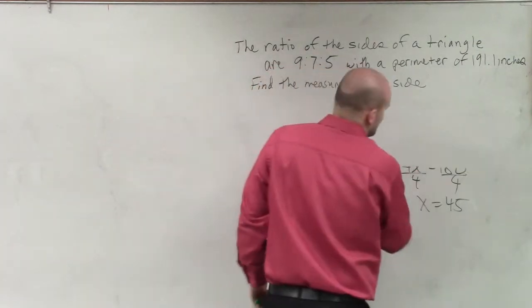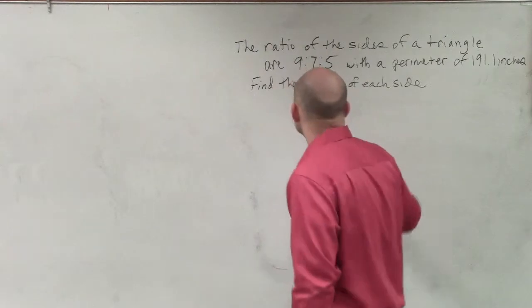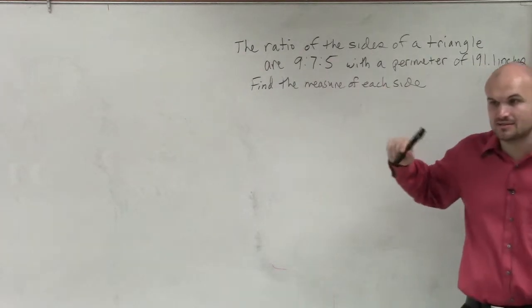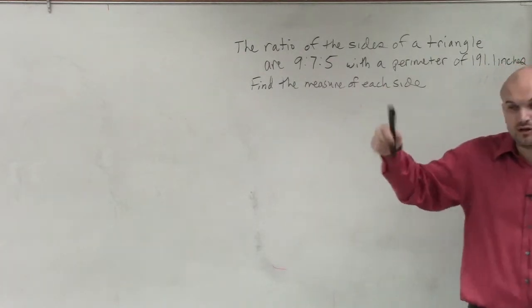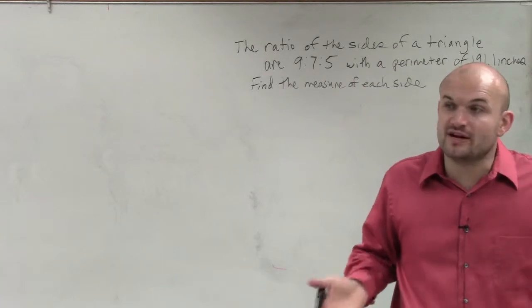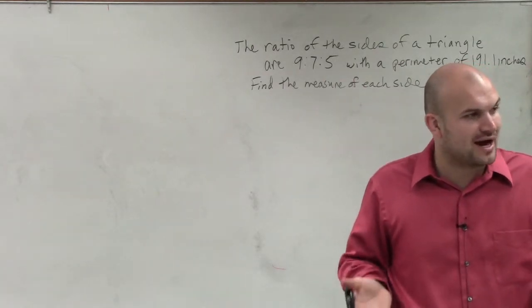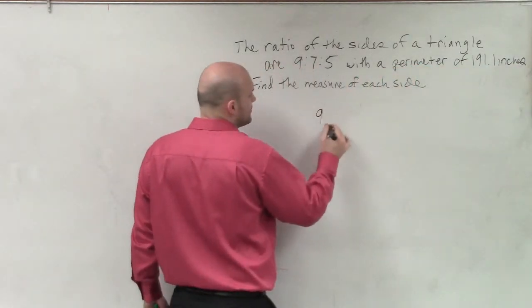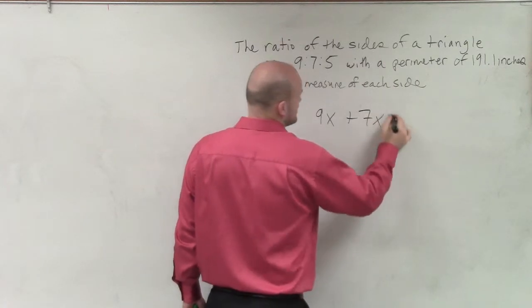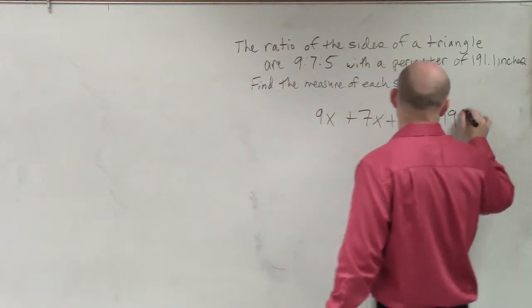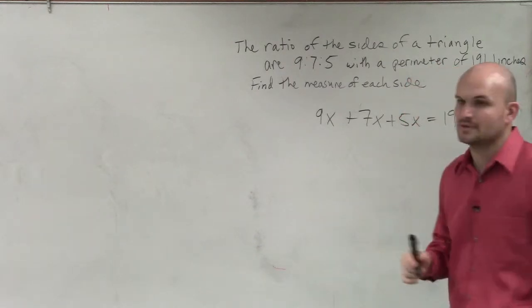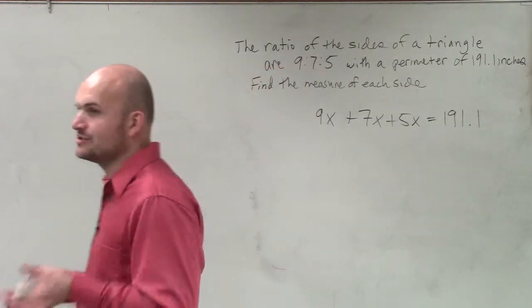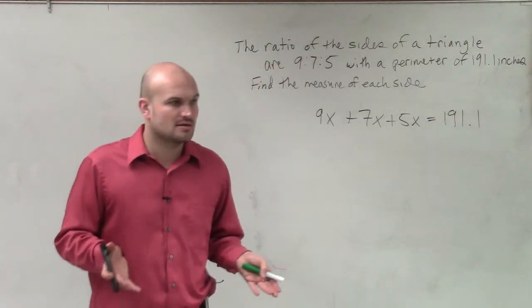So let's look at this problem. They say the ratio is 9, 7, and 5. Well, we know those are not the actual lengths. So what we need to do is figure out what we divided the actual lengths by to get our reduced ratio of 9, 7, and 5. So I'm going to write 9x plus 7x plus 5x equals 191, where x is the factor that reduces our side lengths.